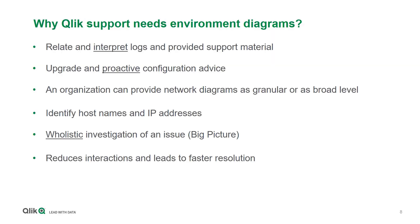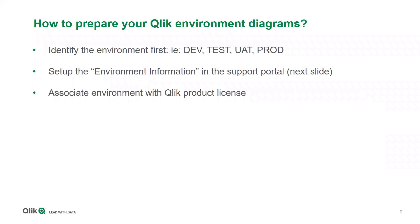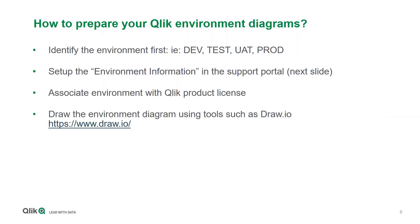Having all this information upfront — how many nodes, how many devices — reduces interactions between the support engineer and the customer. It's also good to note what type of environment it is: development, test, UAT, or production, since SLAs differ. Qlik support has an area in the portal where you can set environment information by license, and next time you open a support case you just choose that environment and all the license details will carry over to the support case.